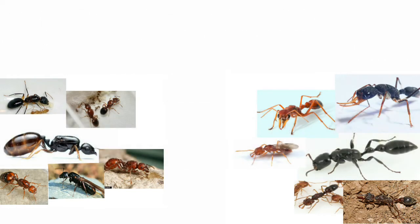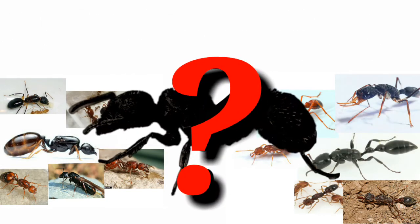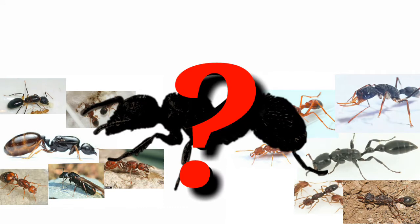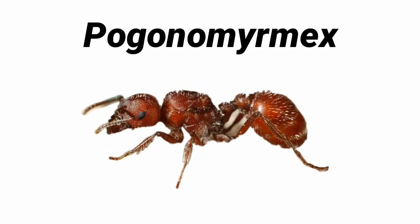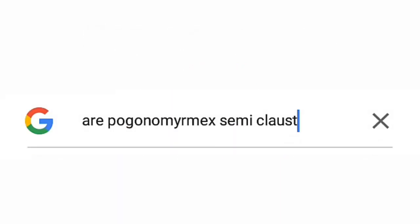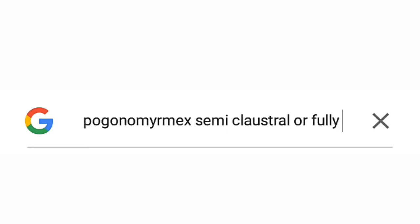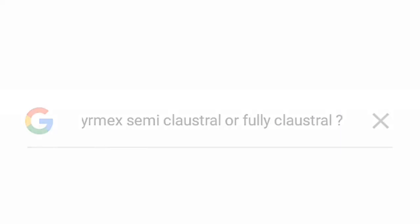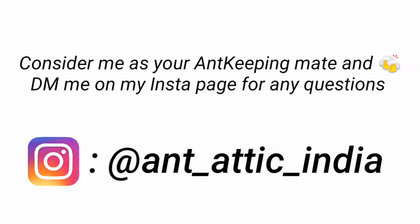This will help you in identifying whether you have a semi queen or not. It's pretty easy to know this just by knowing the species of the queen ant you have, because you can search it on the web whether that particular species is fully claustral or semi claustral, or you can even ask your ant keeping mates.